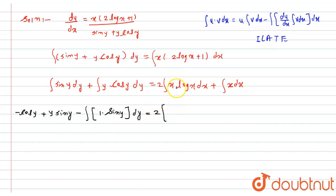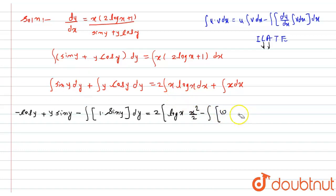For the right side, the first function is log(x) because logarithmic comes before arithmetic. So log(x) times integration of x which is x²/2, minus integral of derivative of log(x) which is 1/x times x²/2 dx.